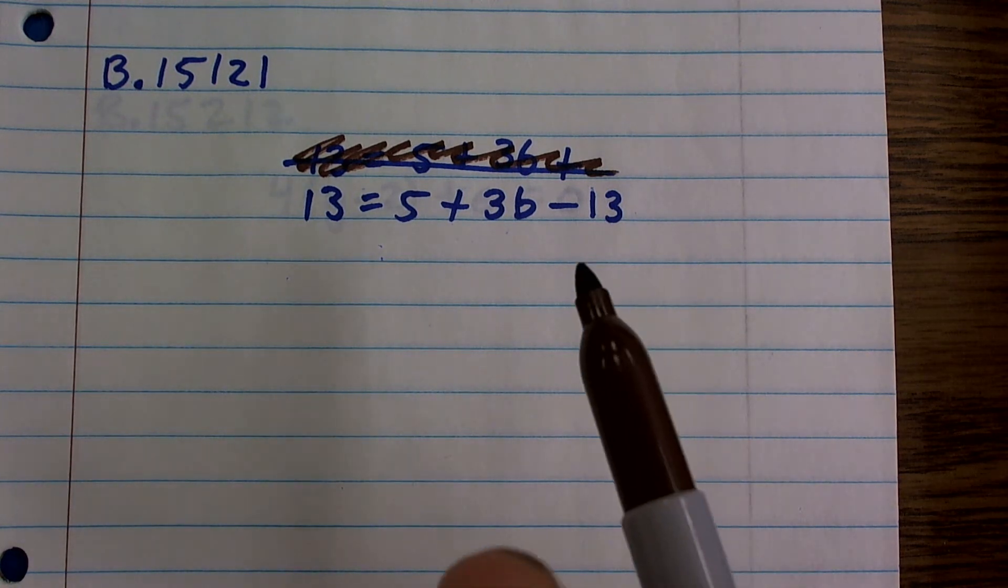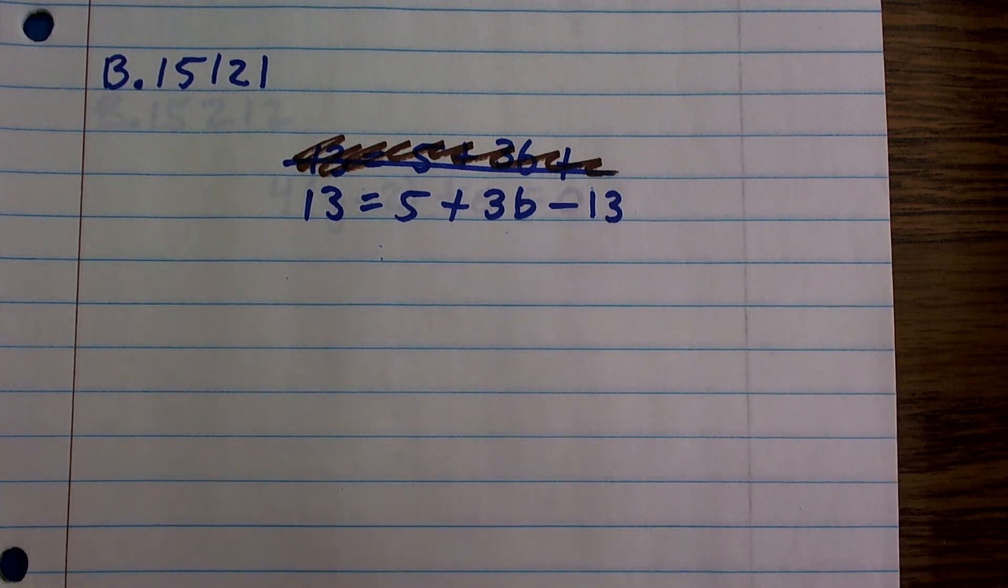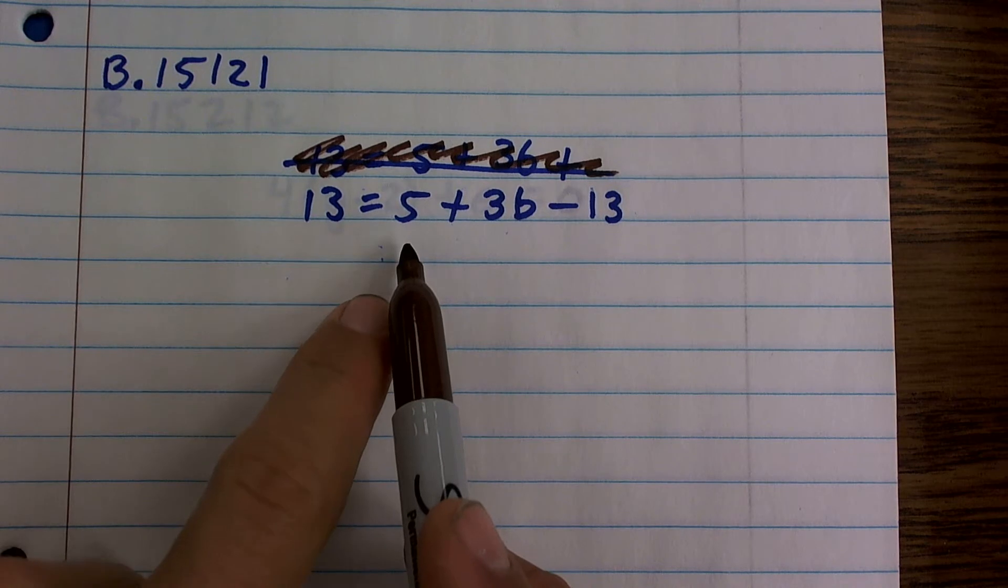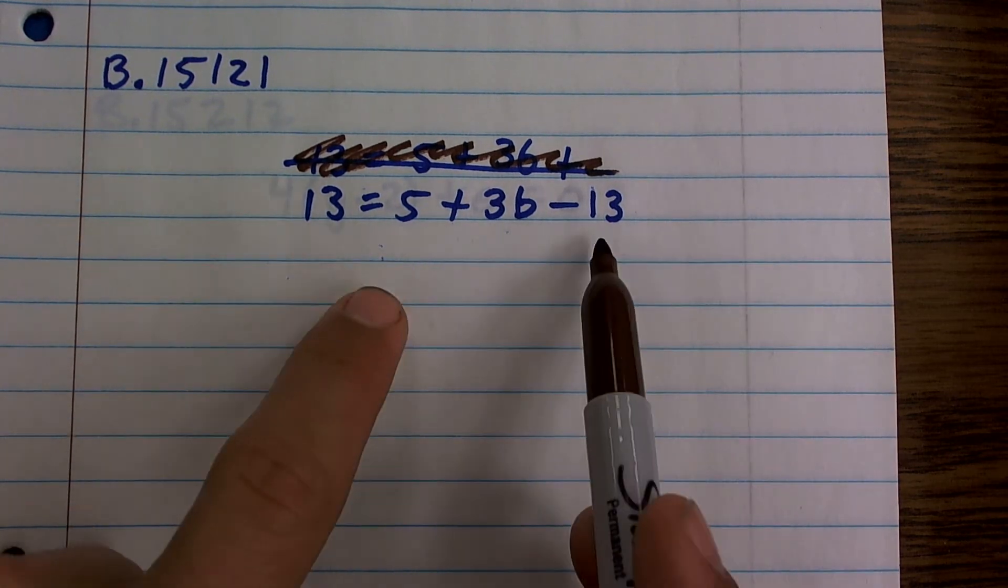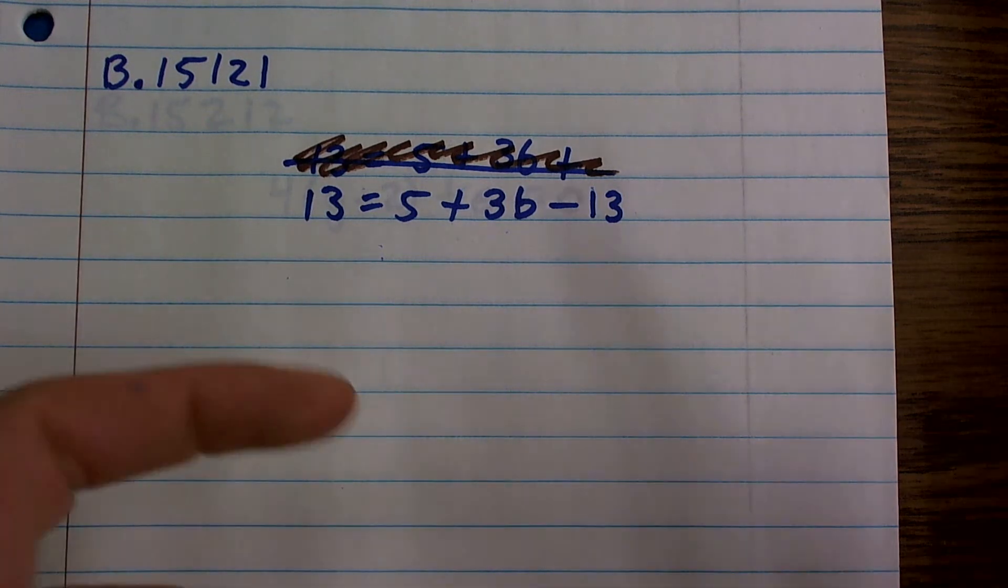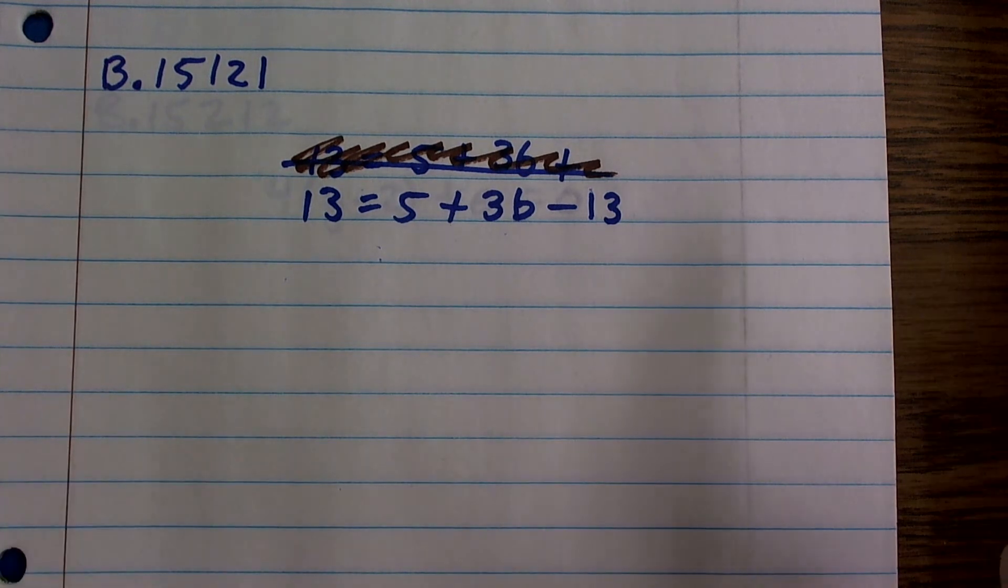Well, remember, we always have to undo addition and subtraction. The answer is it actually doesn't matter as long as you do it to both sides. So what I could do is I could subtract the 5 from the 5 and the 13, or I could add a 13 on the right side and add a 13 on the left side. And both of those would produce equivalent equations, and it doesn't matter which one you do first.